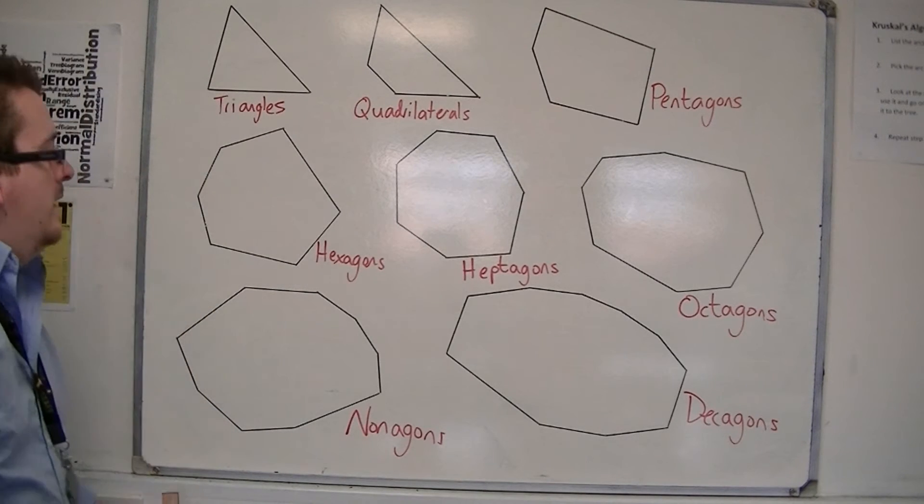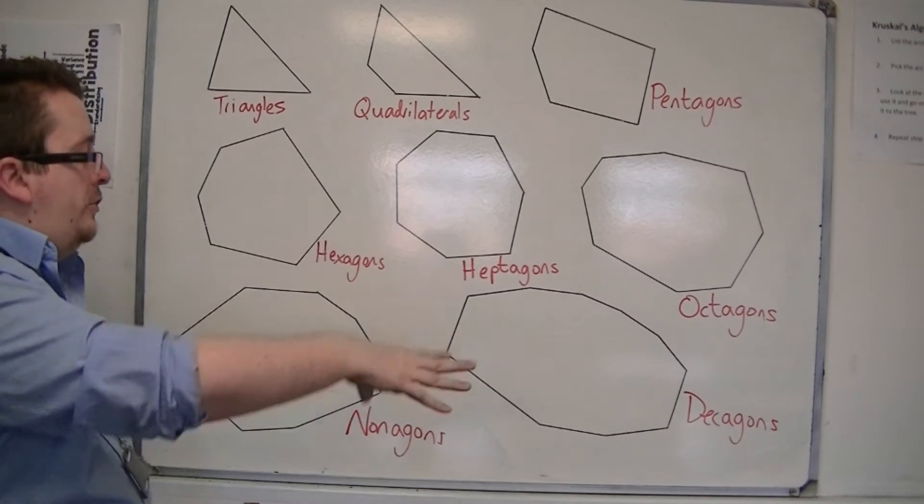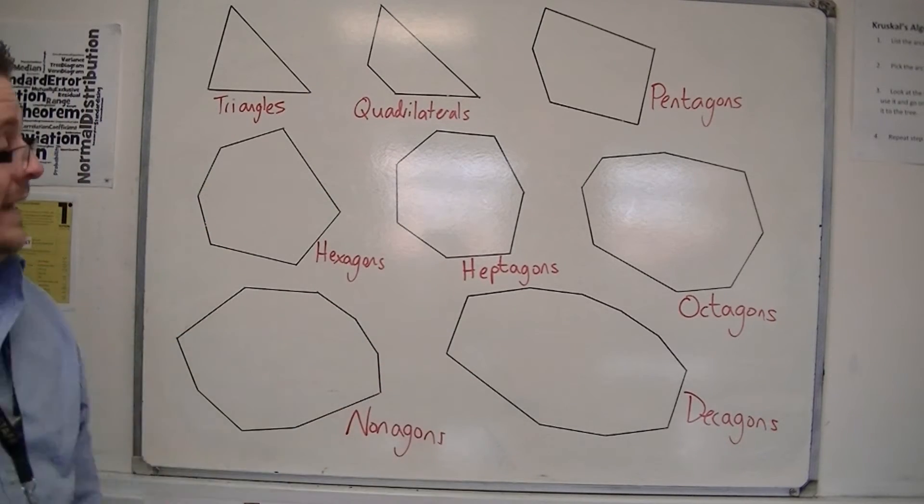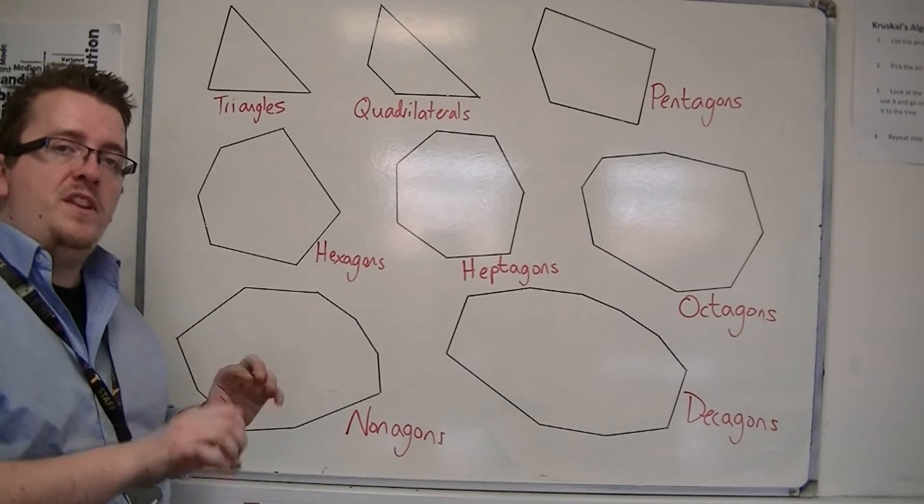So these are the names of the shapes: triangles, quadrilaterals, pentagons, hexagons, heptagons, octagons, nonagons and decagons. And really you should know all of those and be able to identify them by the number of sides.